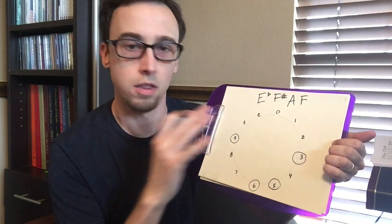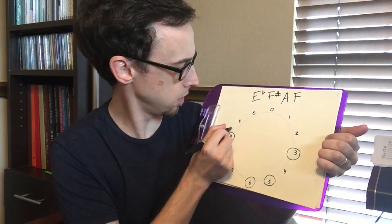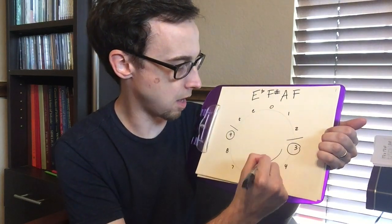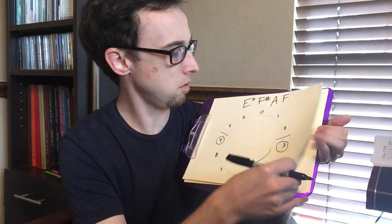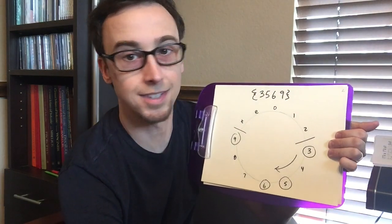Then you find the largest interval between two adjacent pitches, which is between this nine and this three. And then we just read it clockwise. So our normal order for this is three, five, six, nine.